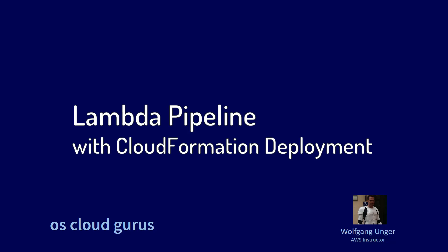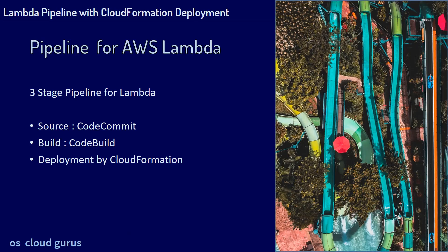Welcome to this hands-on lesson where we're going to create a Lambda pipeline with CloudFormation deployment. It's going to be a three-stage pipeline. The first stage, the source, is going to be CodeCommit. We need a CodeCommit repository first. The build stage is gonna be CodeBuild and we already have created some CodeBuild projects. The deployment stage is gonna be done by CloudFormation.